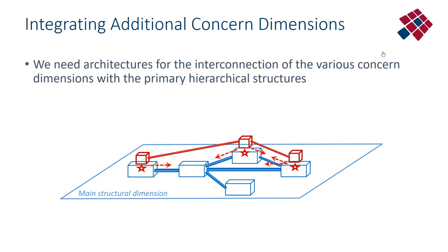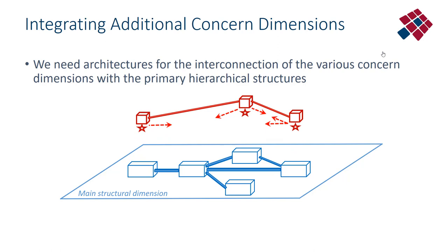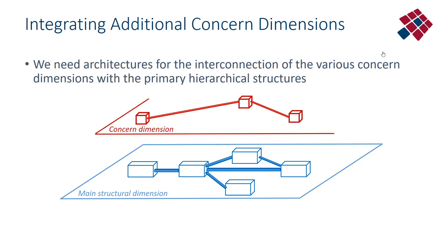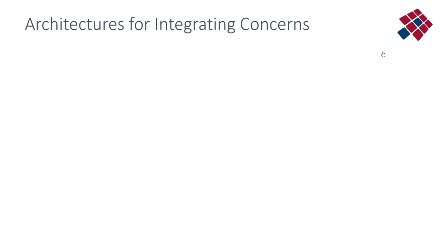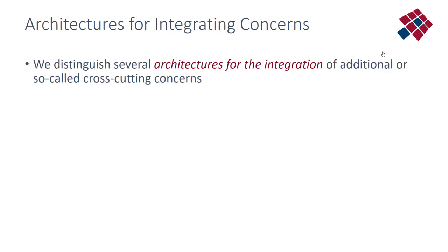These other concerns should be considered on their own concern plane, in their own dimension. It is just another concern plane — it needs to be designed there. In this concern dimension, we can design the structure of this other utility dimension, but of course we have to integrate or interconnect it to the main structural hierarchical architecture. We distinguish several architectures for the integration of these additional dimensions, utilities, or so-called cross-cutting concerns — the concerns that cut right across the main functional structure.